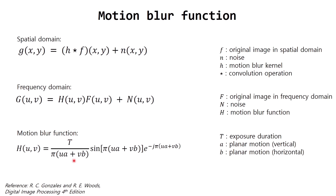The exposure duration T and the planar motion parameters a and b are key. The exposure duration will make our image look darker or brighter, and the planar motion controls the magnitude of the motion — the larger the value, the more blur we get.